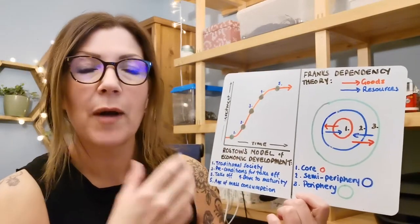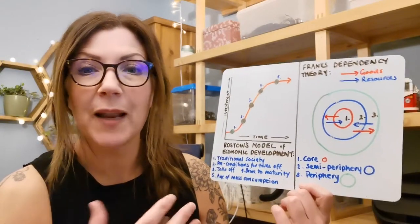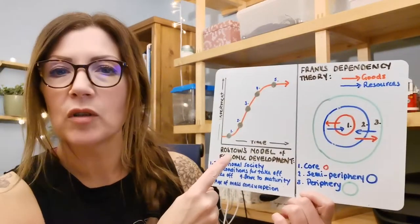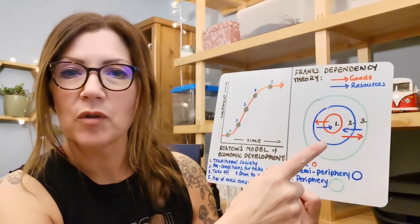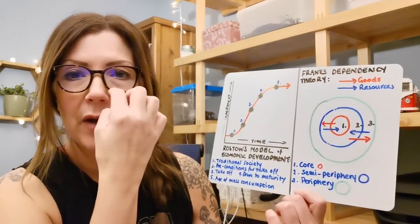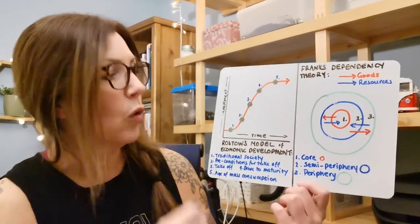So two of the models that talk about why countries develop and try to explain it are Rostow's model here on the left and Frank's model here on the right. I'm going to go over both of them very briefly with you just to explain the significance of each one.